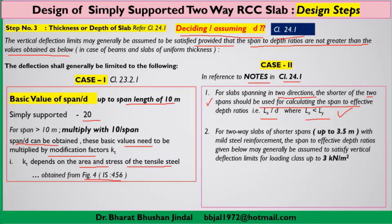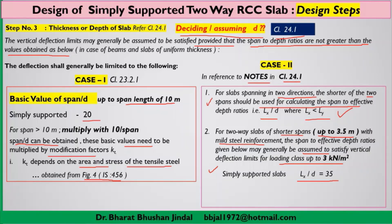For two-way slabs, if the shorter span length is up to 3.5 meters and mild steel reinforcement is used, the span-to-effective-depth ratio can be assumed to satisfy the vertical deflection limit. An additional condition is that the loading class must be up to 3 kN/m². In the case of simply supported slabs, the LX/D ratio can be taken as 35 when mild steel reinforcement is used.